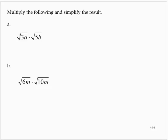Multiply the following and simplify the result. If we are asked to multiply two radicals with the same index, we can rewrite it as a single radical with that index and multiply the radicands, the insides.